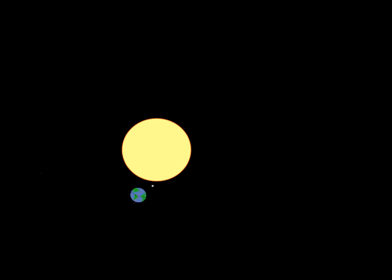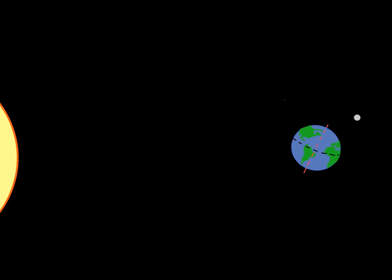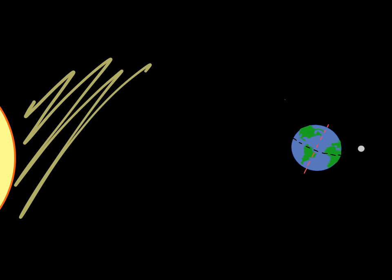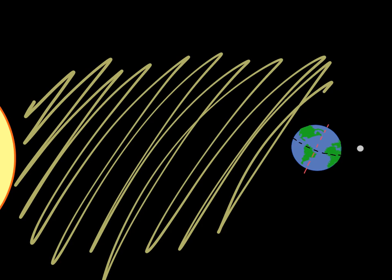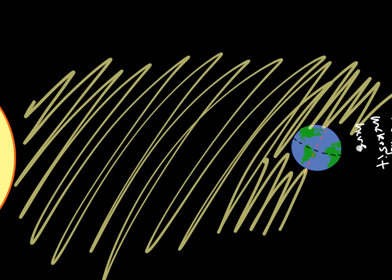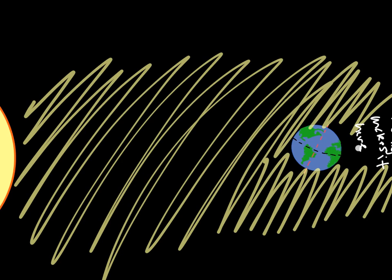The opposite can also happen where the Moon is on the opposite side of the Earth, and at certain times on the Moon's orbit, its light will completely be blocked out by the Earth. If the Sun is shining sunlight this way, the Earth can actually block the Moon's sunlight. The Moon doesn't go totally dark — it actually turns kind of red because of the way light bends around our atmosphere. During a lunar eclipse, the Moon actually turns a little bit red, and it happens when the Earth is blocking sunlight from the Moon.